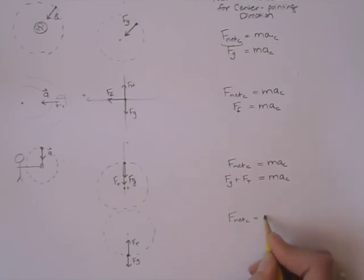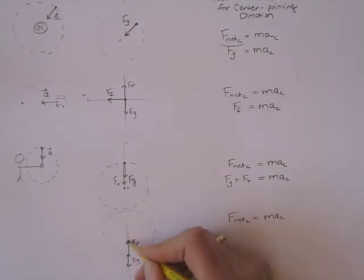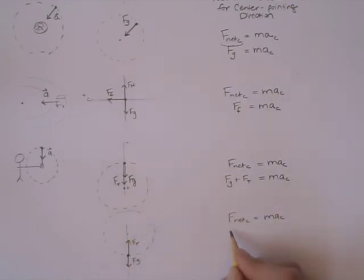Writing Newton's second law, we have our center pointing forces minus the ones that are pointing outward. So Ft minus Fg equals m times the acceleration.